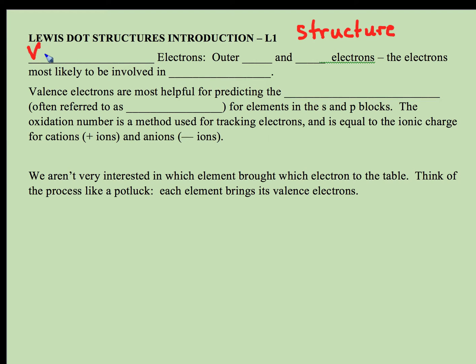When we're working with Lewis dot structures, what we'll be talking about and counting are our valence electrons. These are our outer s and p electrons - the electrons most likely to be involved in bonding. Valence electrons are most helpful for helping us understand the molecular structure.